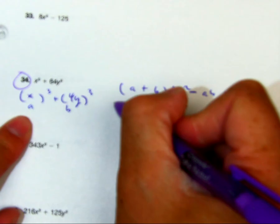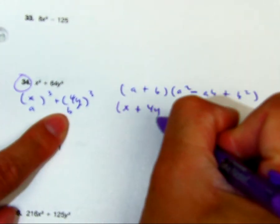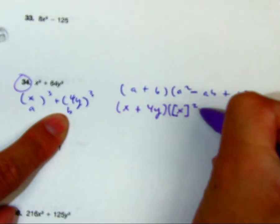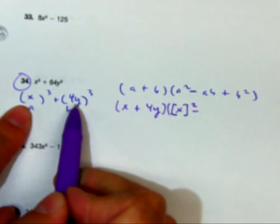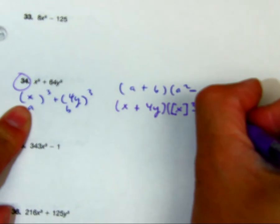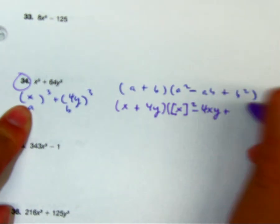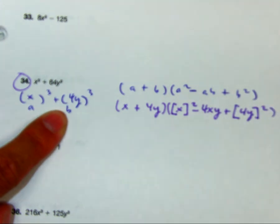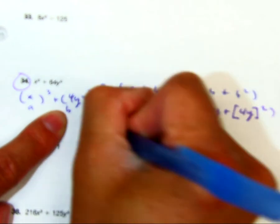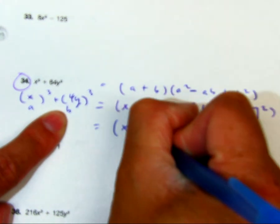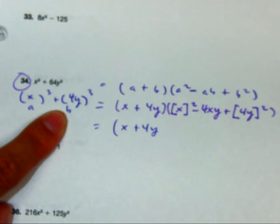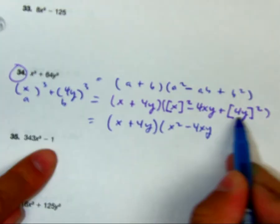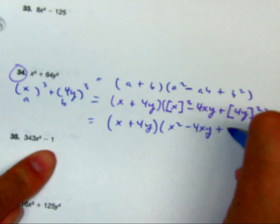I'm going to do my substitution: X plus 4Y. Pay attention here — this one is X squared minus, A times B is 4XY, and your B squared value is going to be 4Y squared. So if you simplify that, I have X plus 4Y, X squared minus 4XY, and then this one is going to be 16Y squared.